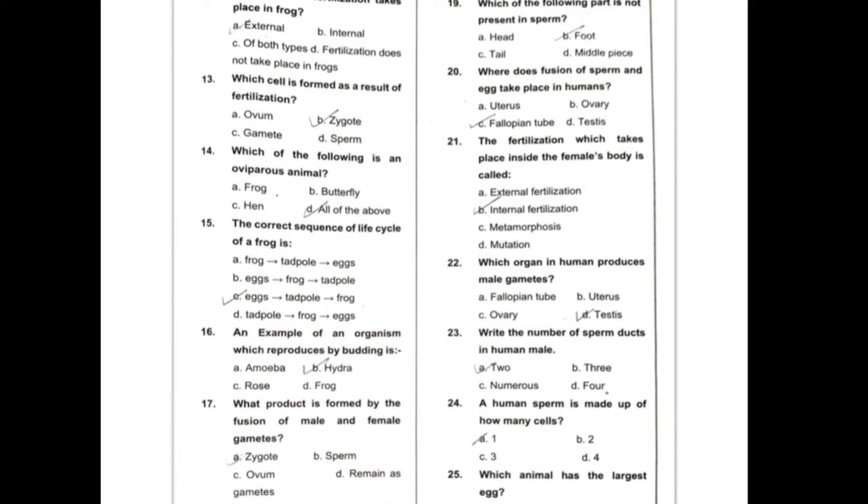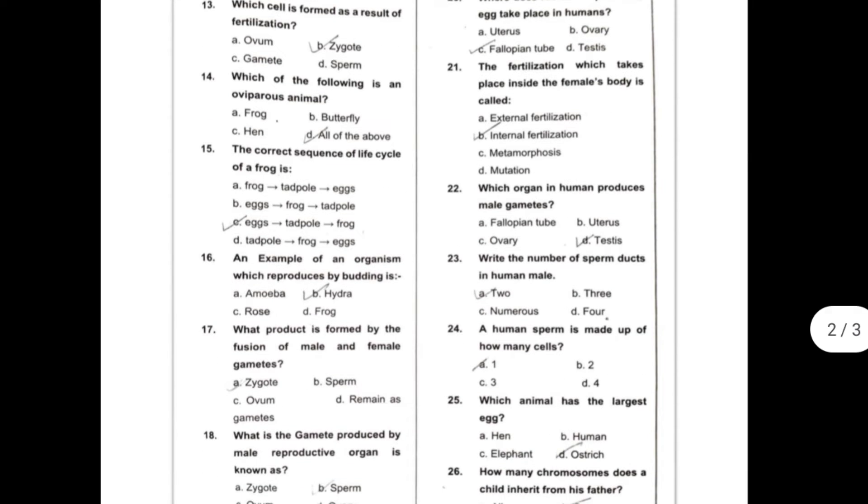Thirteenth, which cell is formed as a result of fertilization? So this can be zygote. Fourteenth, which of the following is an oviparous animal? So this can be all of the above, that is frog, butterfly, and hen.